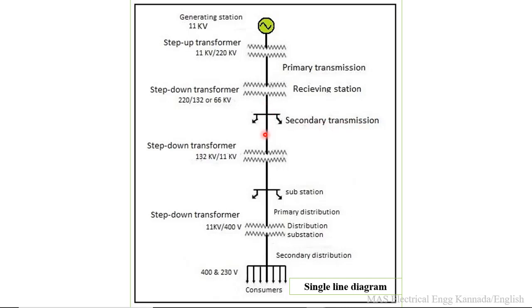These lines are for another substation. These are the secondary transmission lines at a voltage of 132 or 66 KV. Next, we need to still step down the transformer voltage.